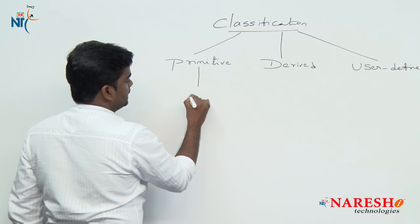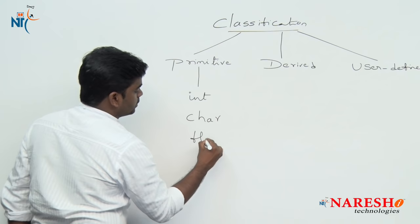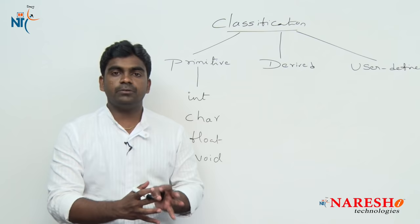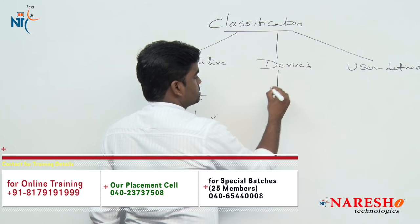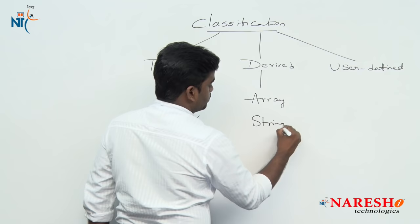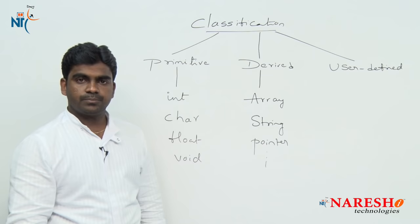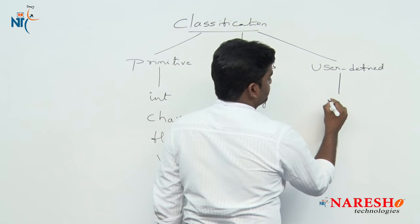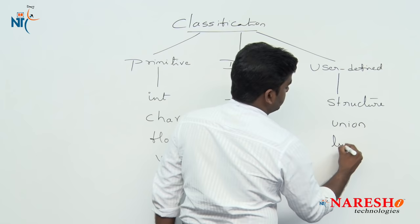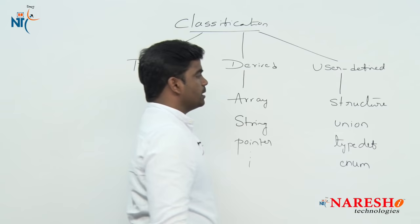Derived data types include array, string, and pointer. User-defined data types include structure, union, typedef, and enum.